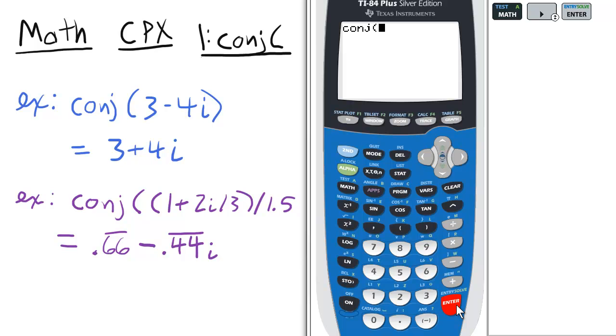For the first example, we'll enter 3 minus 4i. Remember, i is second in the decimal point, and enter. So the conjugate of 3 minus 4i is 3 plus 4i.